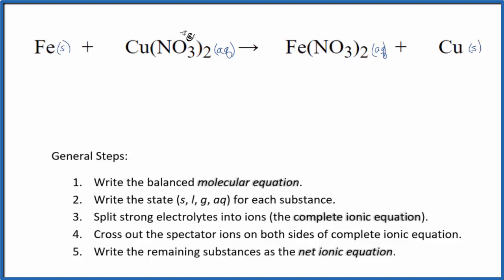We have nitrate is always one minus, and we have two of them. Copper is going to be two plus. Over here, we said the nitrate is one minus. We have two. So the iron is two plus. So let's write the equation.